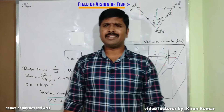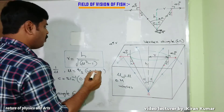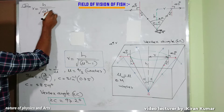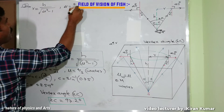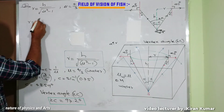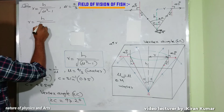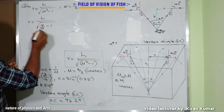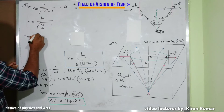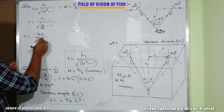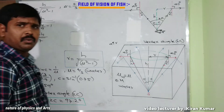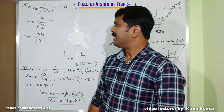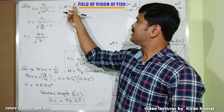Now calculating the radius: r = h / √(μ² − 1), where μ = 4/3. Substituting: r = h / √((16/9) − 1) = h / √(7/9) = 3h / √7. So the radius with refractive index μ = 4/3 is r = 3h/√7.